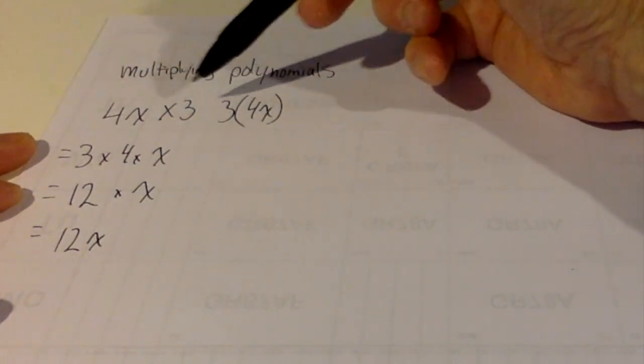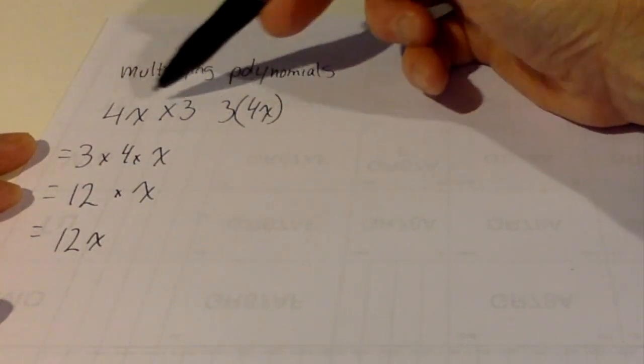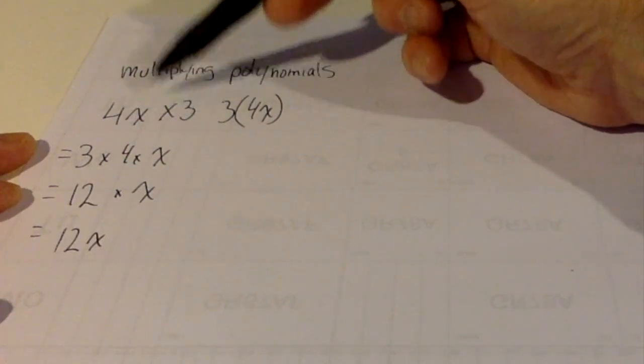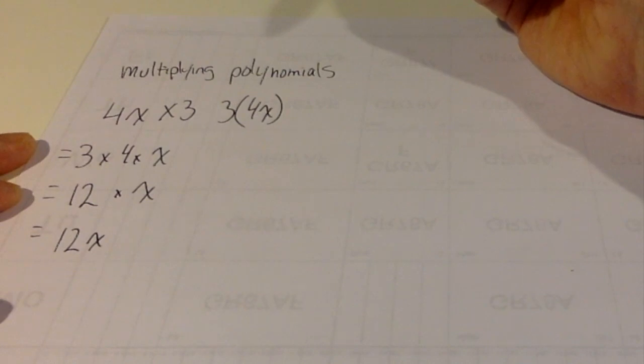So 4x times 3, you just take the actual numbers that you know and multiply them together, and you leave the variable alone.